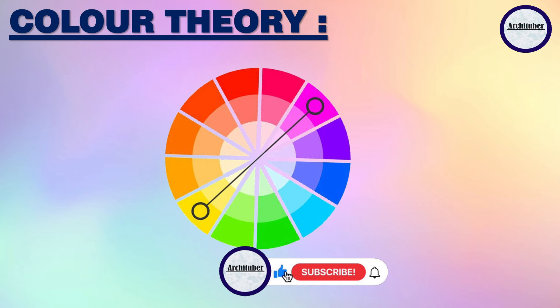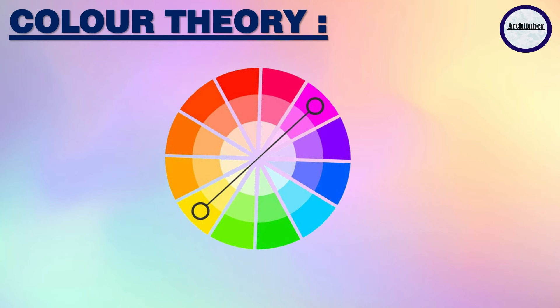The color wheel also includes complementary colors, analogous colors, neutral colors, monochromatic colors, warm and cool colors, RGB colors and CMYK colors. We are going to be discussing all of them in this video itself, so please stay tuned till the very end.